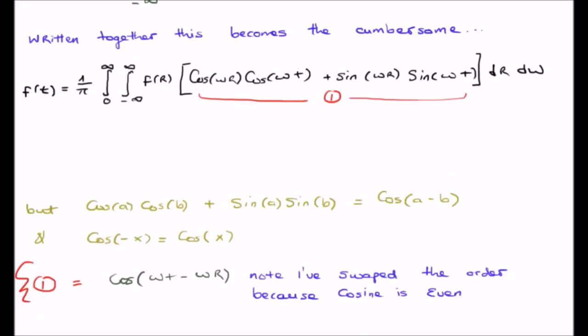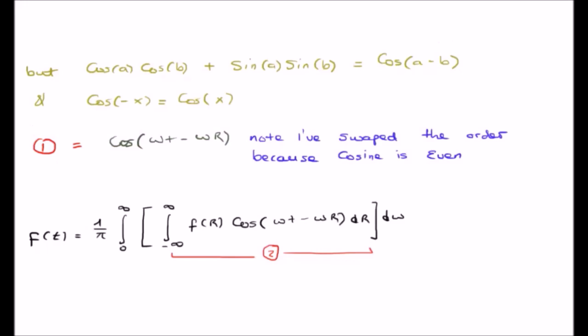What this means is that equation one can be rewritten as cosine omega t minus omega R. Or we can now rewrite the entire equation.